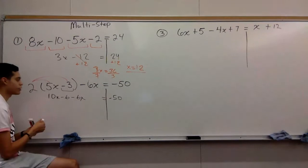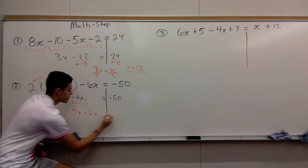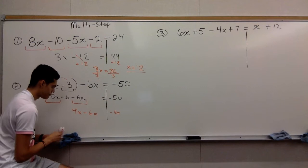Now you have these x's that you want to combine. You have 10x and negative 6x. Combine them - x's go together, constants go together. 10 minus 6 gives you 4x minus 6, equals negative 50.